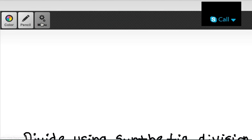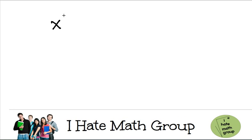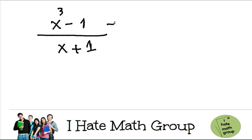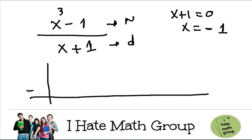Let's go ahead and do another exercise where you have to put in some spaces. Let's say you have x cubed minus 1 over x plus 1. This is the numerator and the bottom is the denominator. So here I set x plus 1 equal to 0, giving x equals negative 1. I put negative 1 right here. Now you can see that I don't have the x squared or x terms.